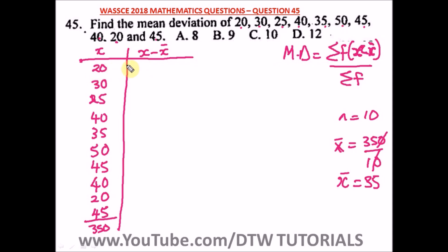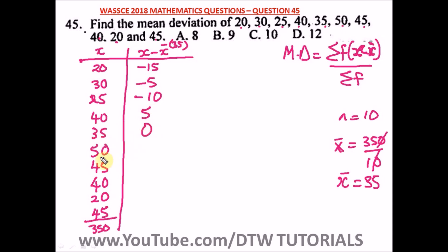Now we compute x minus the mean for each value: 20 minus 35 = −15; 30 minus 35 = −5; 25 minus 35 = −10; 40 minus 35 = 5; 35 minus 35 = 0; 50 minus 35 = 15; 45 minus 35 = 10; 40 minus 35 = 5; 20 minus 35 = −15; and 45 minus 35 = 10.